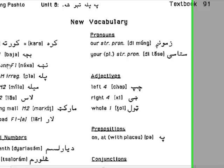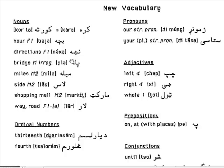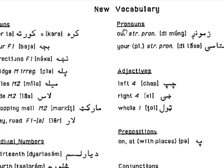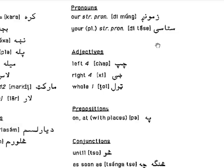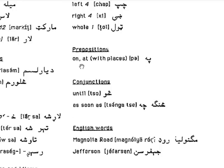New vocabulary encountered in this unit. Nouns: kur or kra or korta means home; bajay means hour or o'clock; necha means directions; pola means bridge; mila means miles; las means side, hand, or arm; marquet means shopping mall or market; lar means way or road. Pronouns: zmung or zmug or zmuj means our; stase means yours or your — it's a plural form. Adjectives: chap means left — you may also hear keen for left in Pashto. He means right. Tul means whole or total.